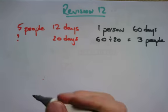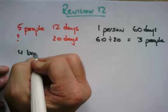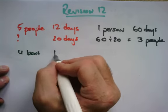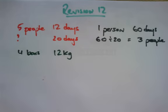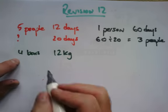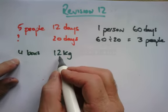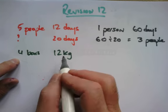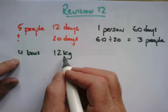Four bars weigh 12 kilograms. How much would five bars weigh? Four bars weigh 12 kilograms. Each bar...